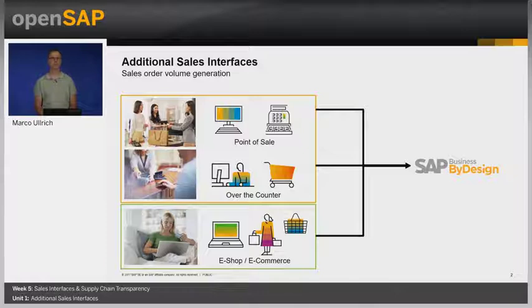Hello and welcome to week 5, the last week of this OpenSAP course. The topic for this week is additional sales interfaces and supply chain transparency. My name is Marco Ulrich and I am happy to guide you through the coming units. In week 2, IRIS has already introduced the demand generation option in demand planning or directly creating a sales or service order. All these options have the goal to plan and schedule the fulfillment of supplies and at the end to generate sales revenue. Unit 1 will cover further options as a kind of pre-processing step to hand over sales order volume to SAP Business by Design.